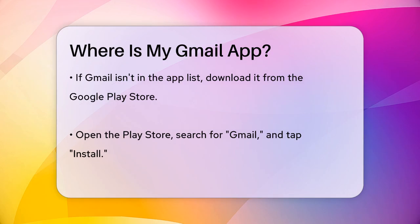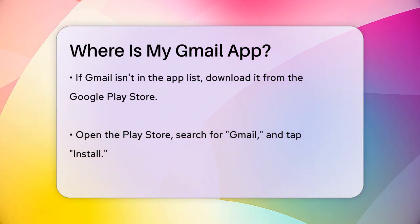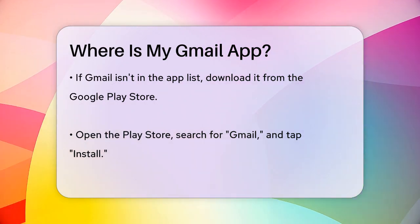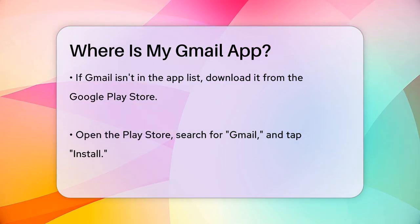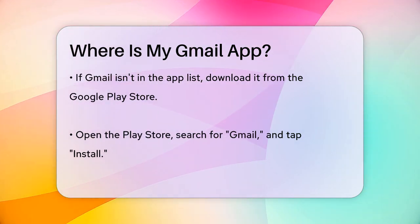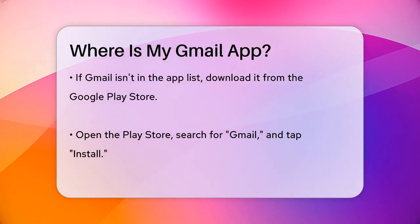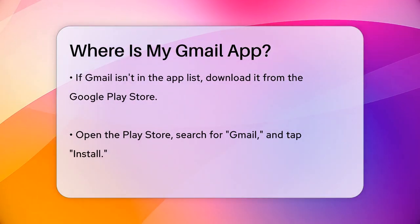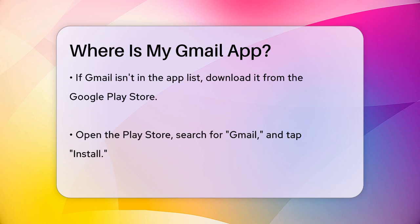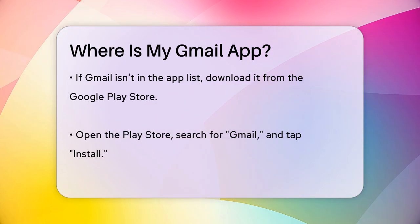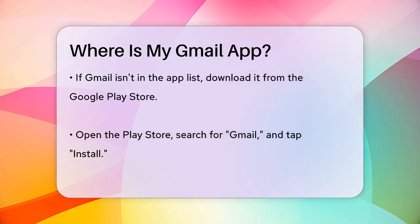Another reason you might not see the Gmail app is if it's been hidden or moved to a different home screen or folder. Check all your home screens and folders to see if it's been misplaced. You can also use the App Drawer, which is usually accessible by swiping up from the bottom of the screen or tapping the App Drawer icon. Here, you'll find all your installed apps, and you can search for Gmail.